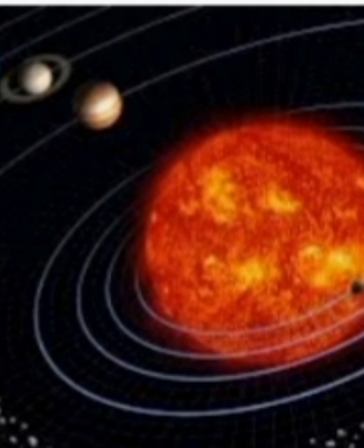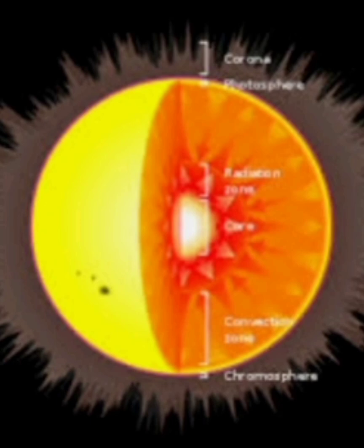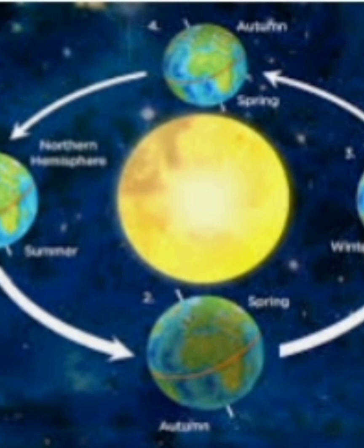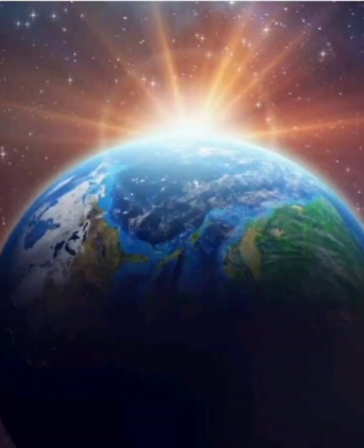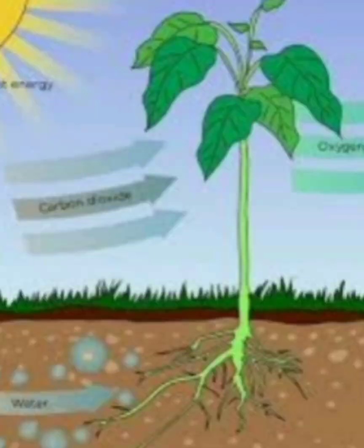The Sun is the star at the center of the solar system. It is a hot ball of gases that gives off great amounts of energy. Life on Earth depends on light and heat from the Sun. The Sun is the closest star to Earth.